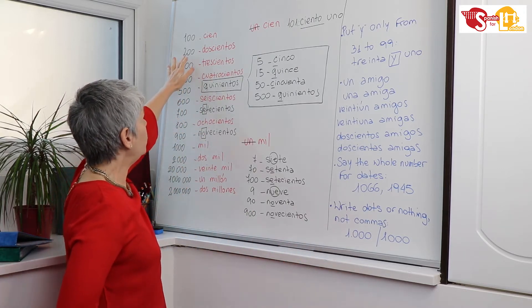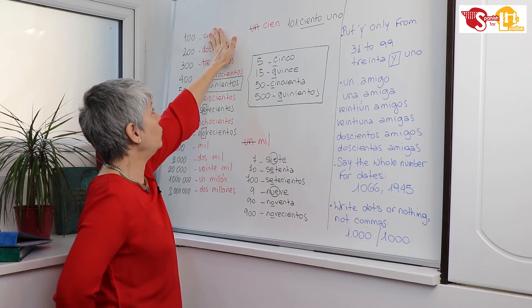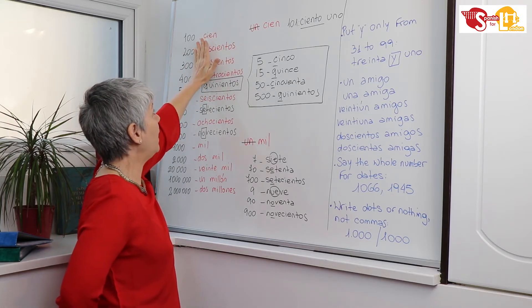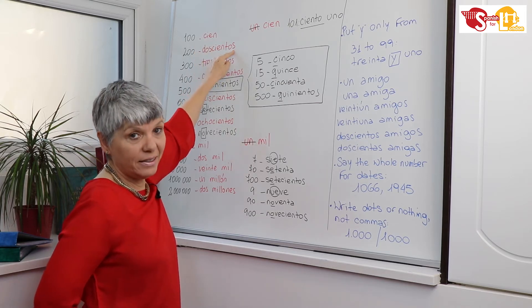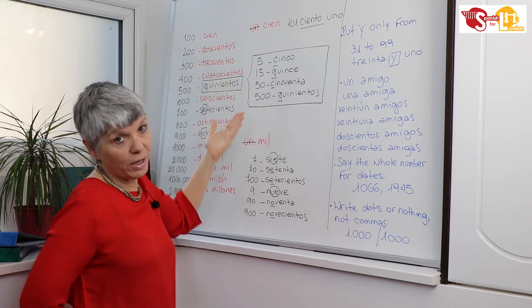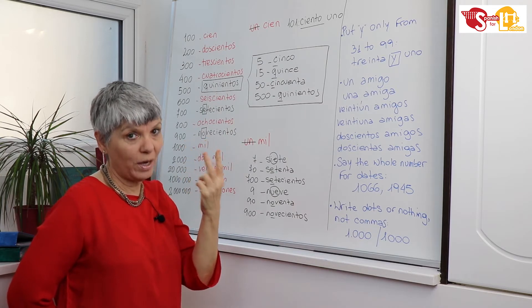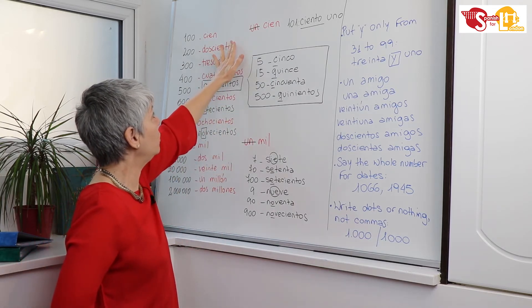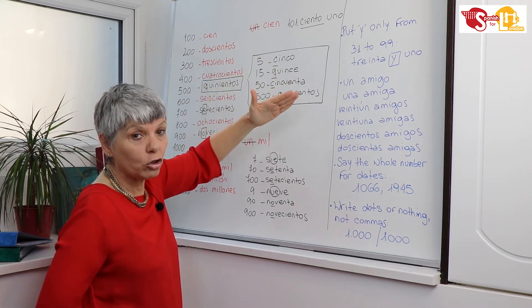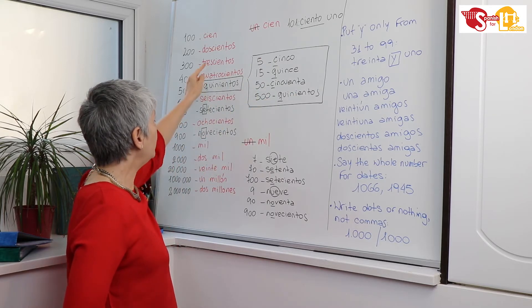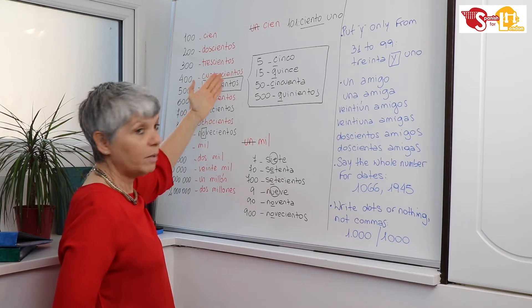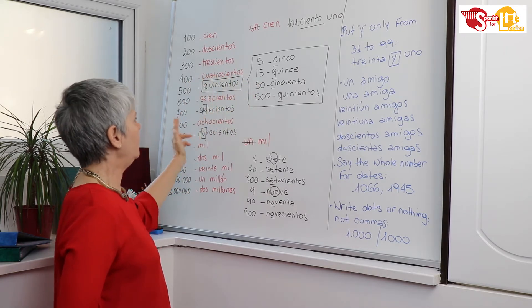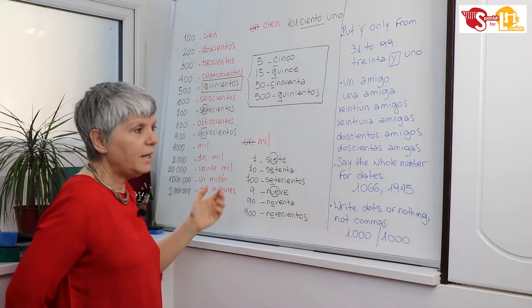Then you want to say 200, you put dos which is two and then plus cientos. Remember the S at the end because it's a plural form. It's two times one hundred, so it's not doscientos but doscientos. And the same. Tres plus cientos, trescientos. Cuatro plus cientos, cuatrocientos. Seiscientos, ochocientos.